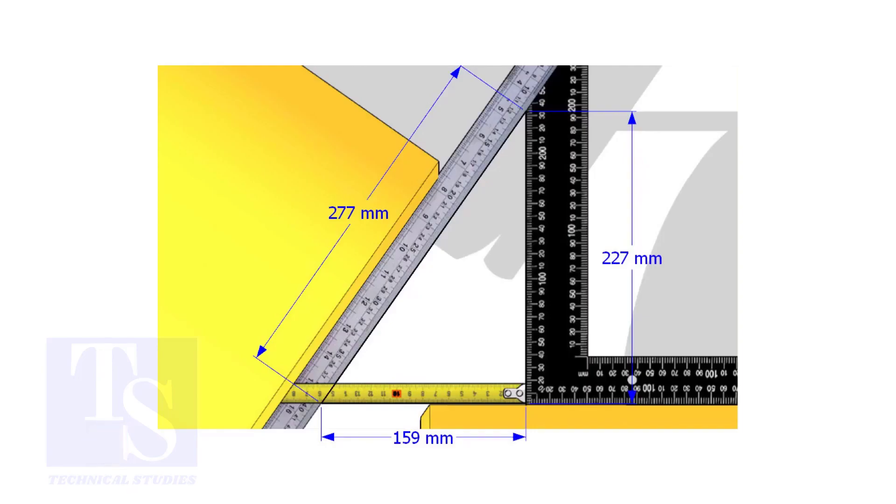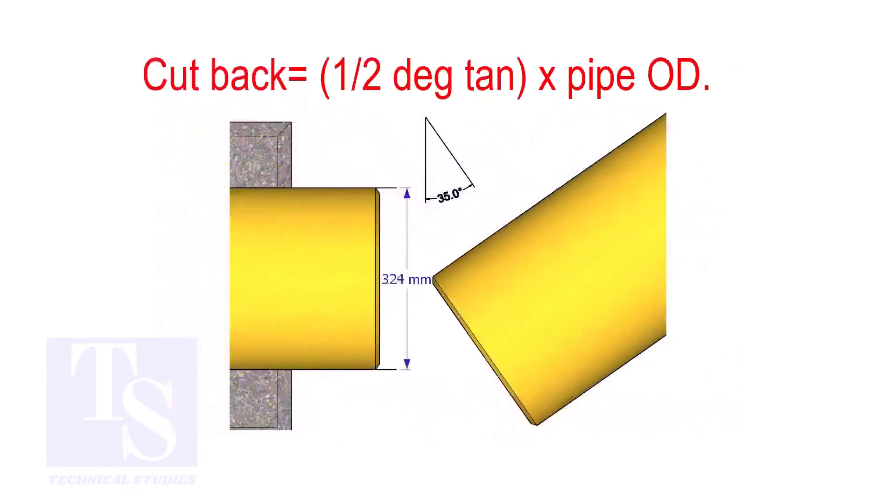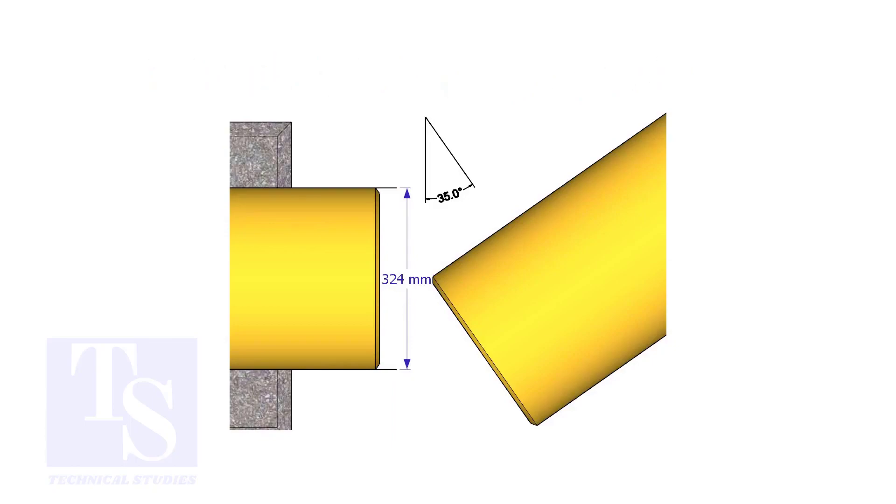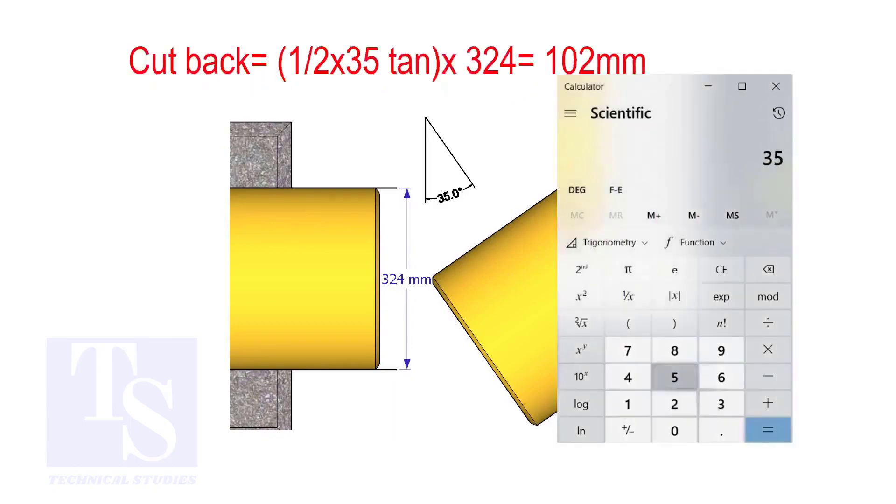How to calculate the cutback of a single cut miter. When it is a single cut, the cutback is half degree tan multiplied by the OD of the pipe. The answer is 102 millimeters.